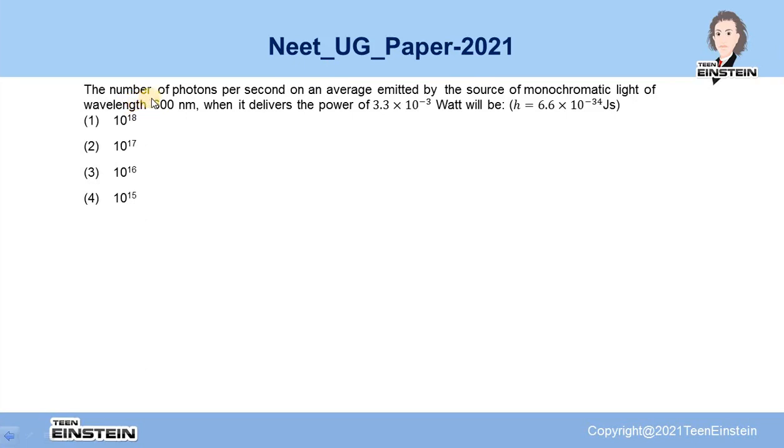In the problem, it is stated that a source of monochromatic light of wavelength 600 nanometer delivers the power 3.3 × 10^-3 watt.